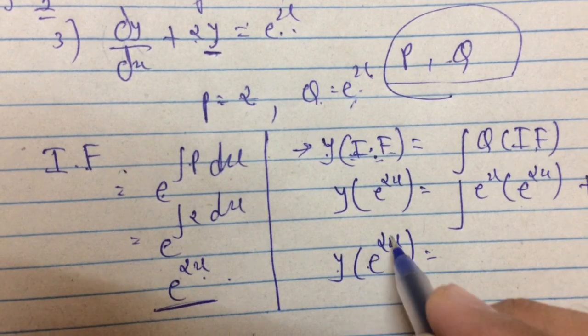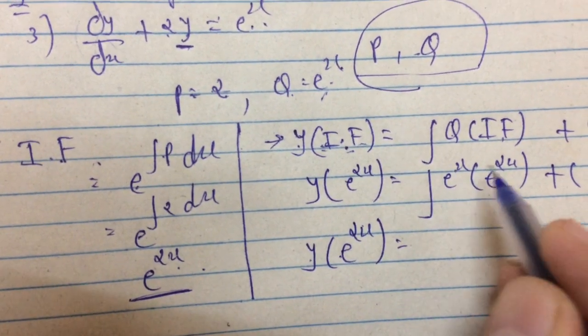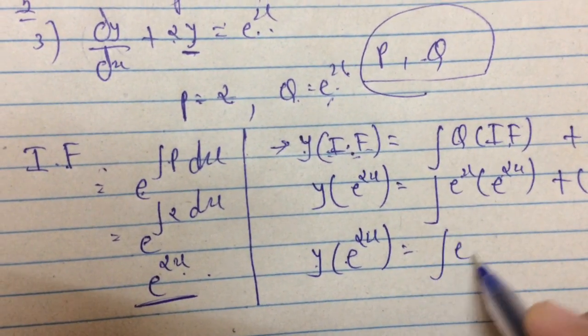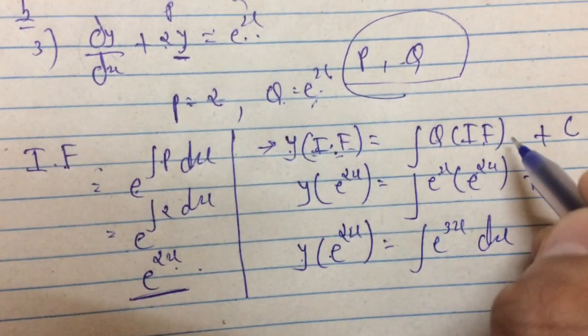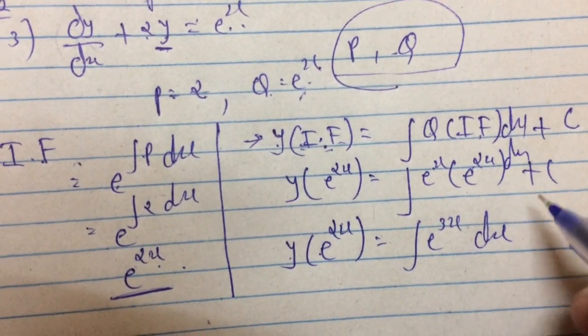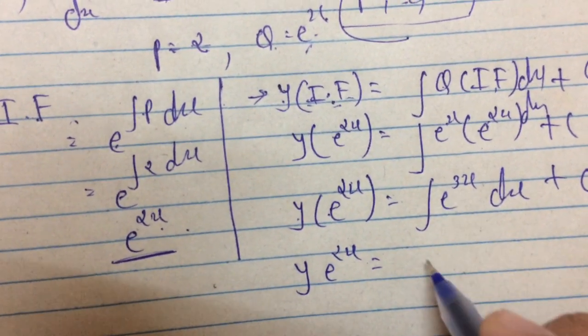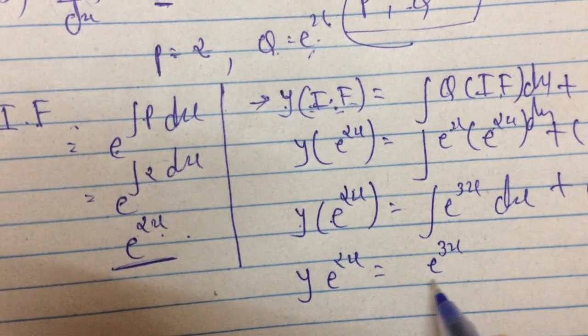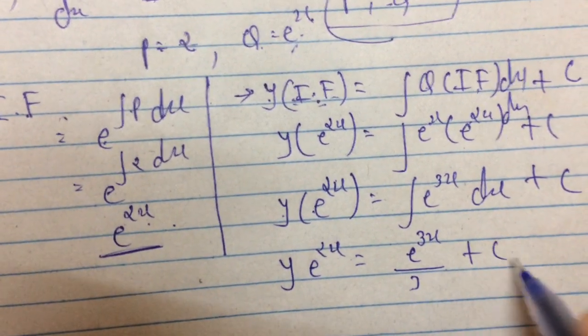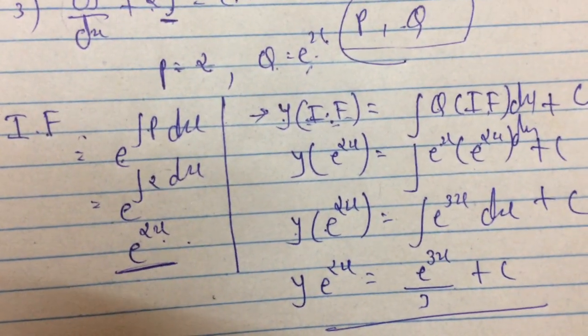y times e raised to 2x equals e raised to x times e raised to 2x, which is e raised to 3x dx plus C. The final answer: the integration of e raised to 3x is e raised to 3x divided by 3 plus C.